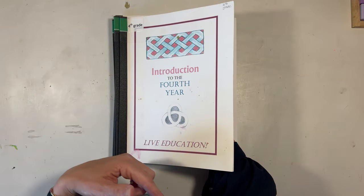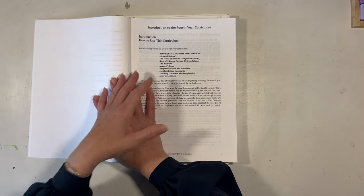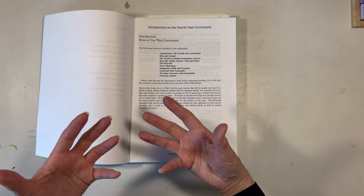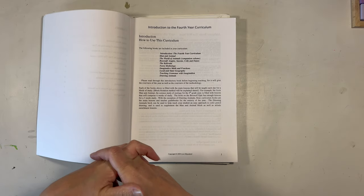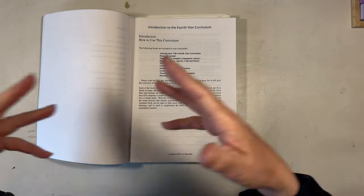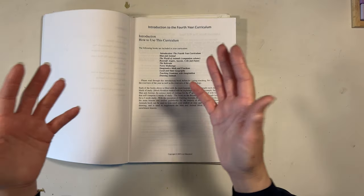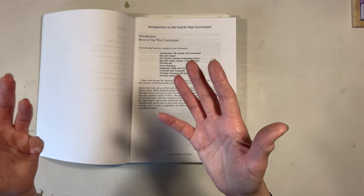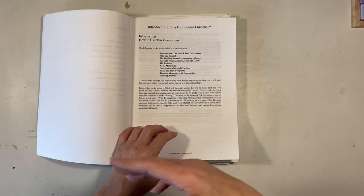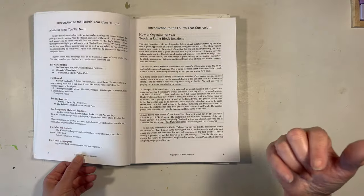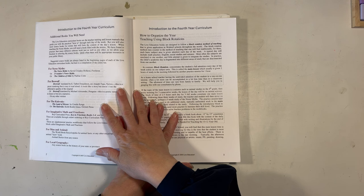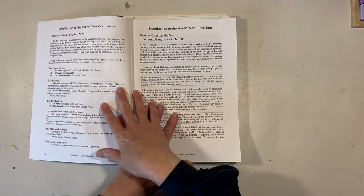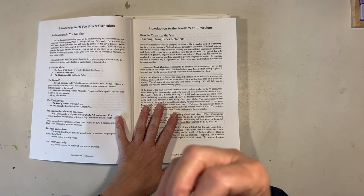I would often skip the introduction and dive straight into the curriculum, but I encourage you to go through it first — especially if you're not familiar with the Waldorf approach — because it's going to set the stage for what to expect that year, how to do your block rotations, and even the concept of a main lesson block. It's also going to give you suggestions for additional books to complement the different main lesson blocks.